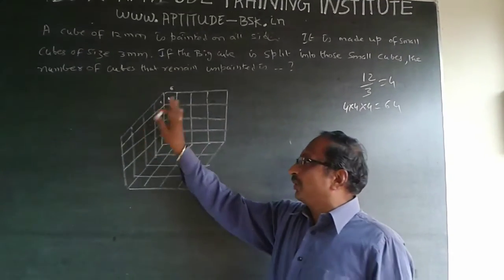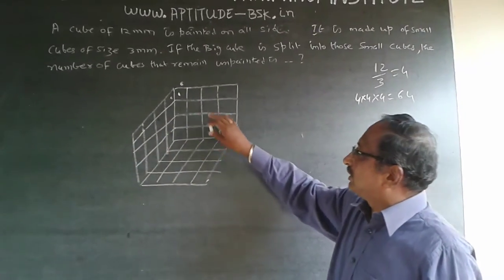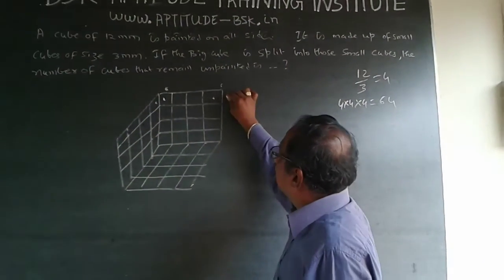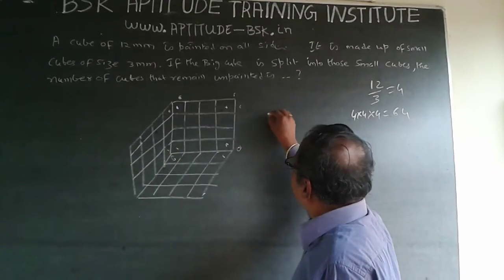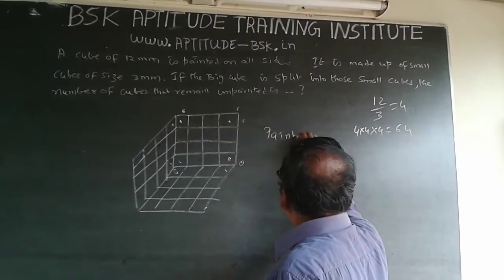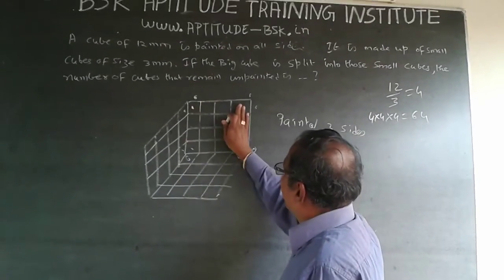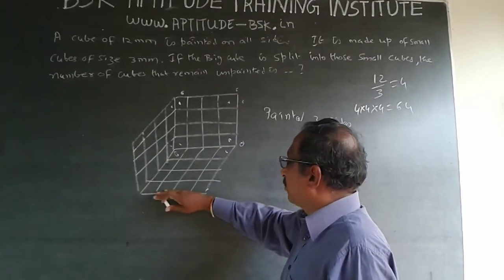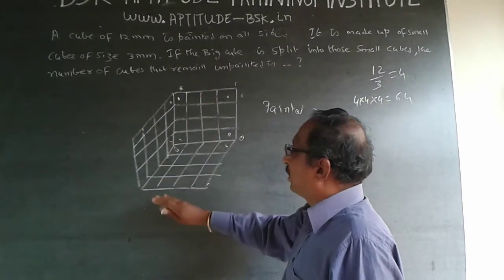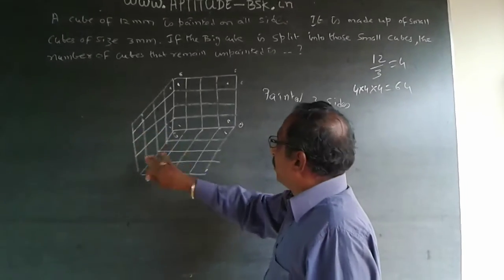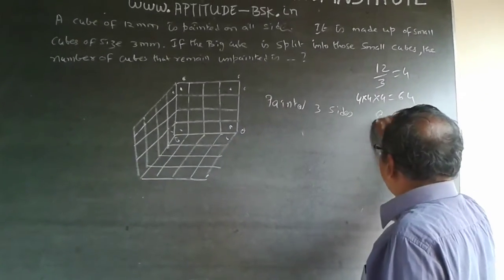As far as this cube is concerned, painted on more than three sides will be nil. Painted three sides: this corner is painted three sides, this corner, this corner, this corner — so painted three sides will be four at the top and four at the bottom. So painted three sides will be eight.